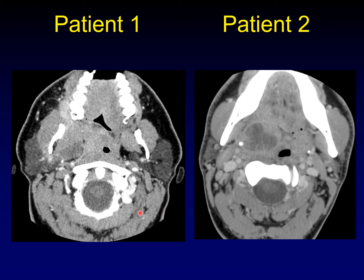So both of these patients have a lot of inflammation on the right side of the suprahyoid neck. They do indeed both have an acute tonsillitis. In patient number 2, we see the pretty classic signs of a peritonsillar abscess.